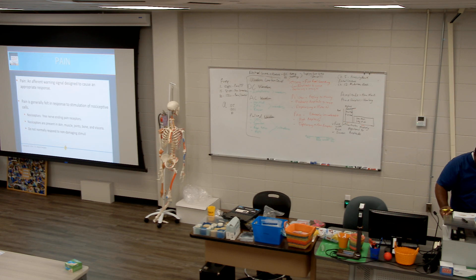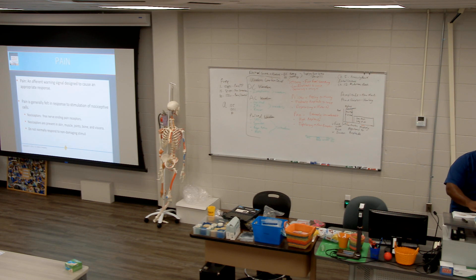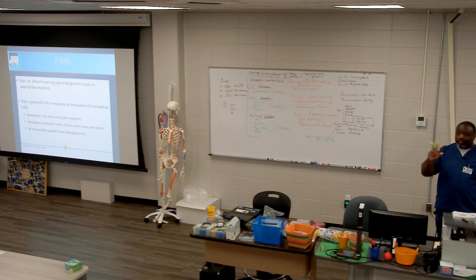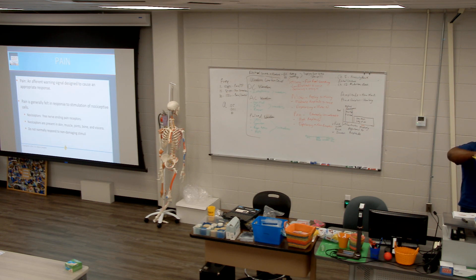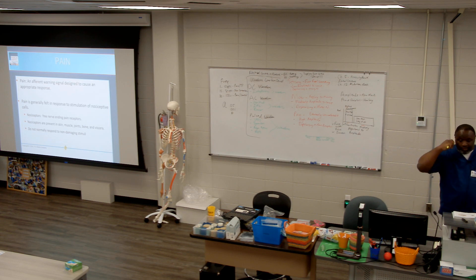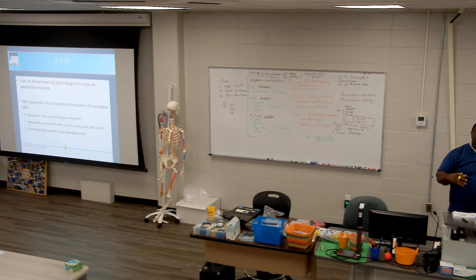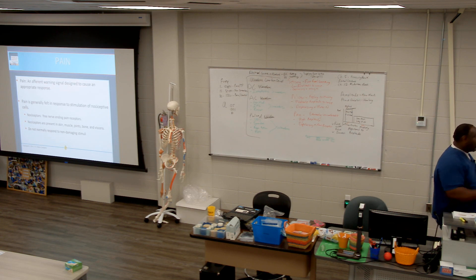The nerve fiber types that mediate pain impulses are A-delta and C-fiber. Recall on the strength-duration curve: A-delta was positioned with the three, and C-fiber was further to the right in alignment with the innervated muscle. These are the cell types that communicate pain up to our brain, so we have two pathways going on.